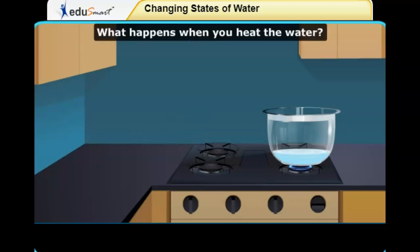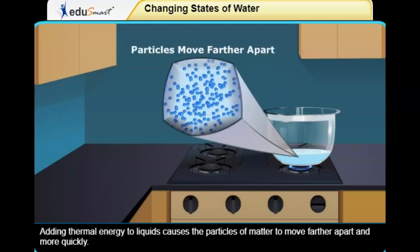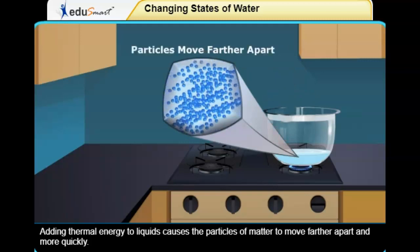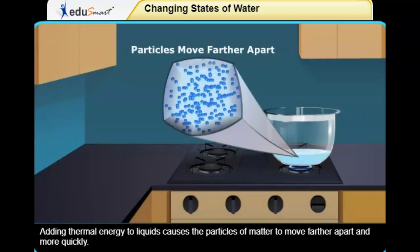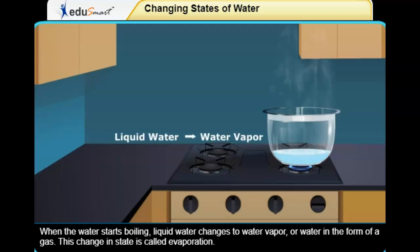What happens when you heat the water? Adding thermal energy to liquids causes the particles of matter to move farther apart and more quickly. When the water starts boiling, liquid water changes to water vapor, or water in the form of a gas. This change in state is called evaporation.